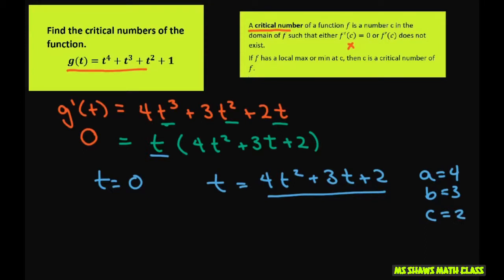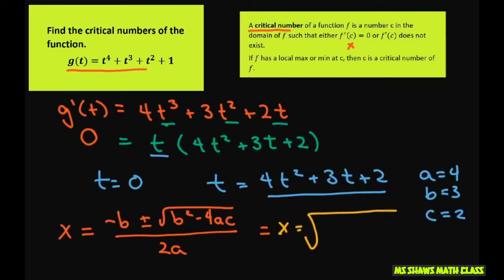Let me write the formula down for you: x equals negative b plus or minus square root of b squared minus 4ac divided by 2a. So filling this in, we get x equals negative 3 plus or minus square root of 9 minus 32 divided by 8.